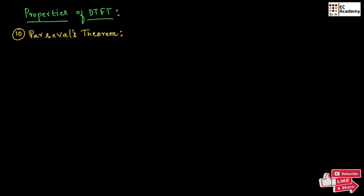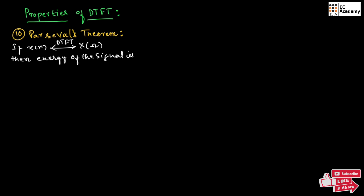Now, let us understand Parseval's theorem. It states that if x of n, for this if we perform DTFT, we will obtain x of omega. Then the energy of the signal is given as e equal to 1 by 2 pi integration of minus pi to pi of magnitude of x of omega whole square d omega.